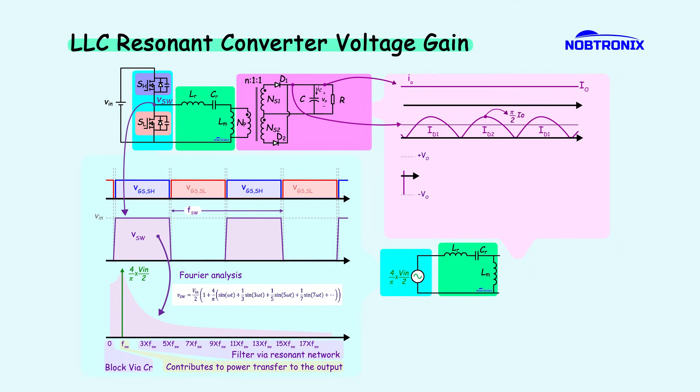The secondary winding voltage has a square wave shape, oscillating between plus VO and minus VO. According to Fourier analysis, this square wave can be approximated by its fundamental component, whose peak value is 4 divided by pi multiplied by VO. Now that both voltage and current components are identified, we can determine the equivalent output load using Ohm's law.